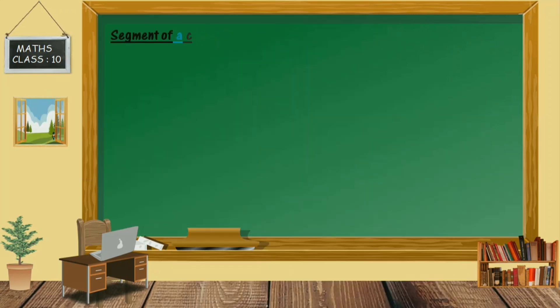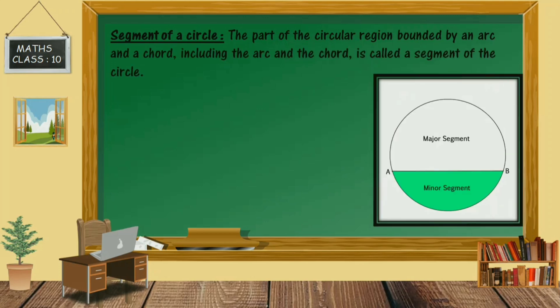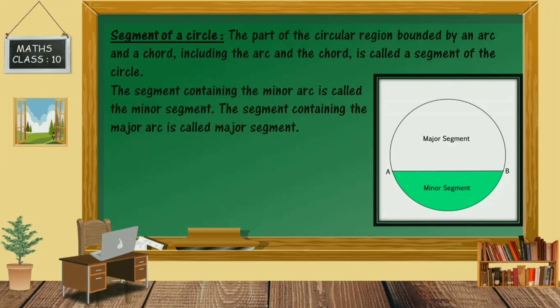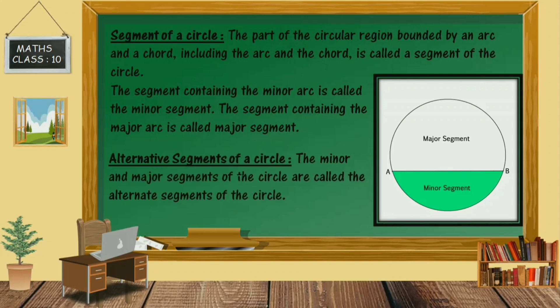Next is the segment of a circle: the part of the circular region bounded by an arc and a chord, including the arc and chord, is called a segment of the circle. The segment containing the minor arc is called the minor segment, and the segment containing the major arc is called the major segment. The minor and major segments of a circle are called the alternative segments of the circle.